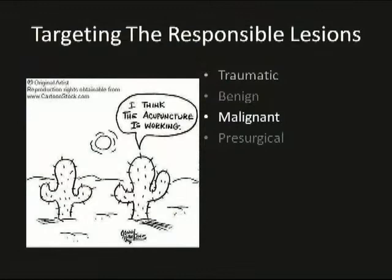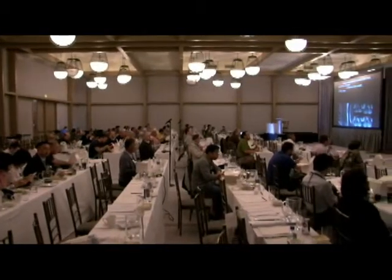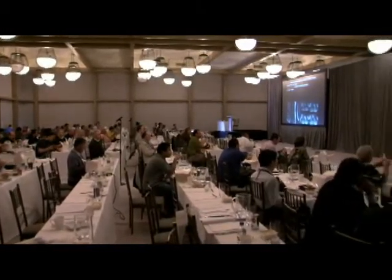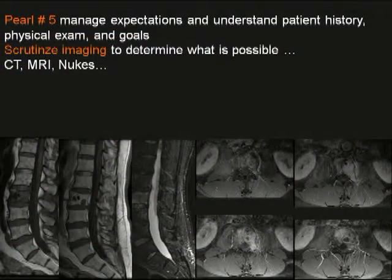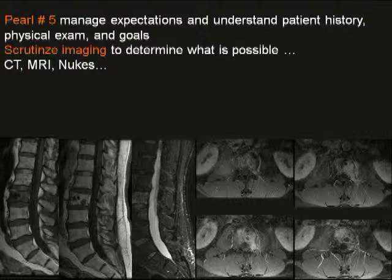Targeting responsible lesions in osteoporosis or neoplastic disease is somewhat different, and just putting a needle anywhere doesn't always have good results. Scrutinizing your images before you go into a study is exceedingly important if you want good outcomes. This is a case of cancer within a lumbar vertebral body causing severe pain. MRI shows enhancement of the tumor, and filling the lytic portions is straightforward. You can see the needle going in, with lytic areas posteriorly. Since I didn't want to extravasate posteriorly, we gave a small amount of cement within the vertebral body.